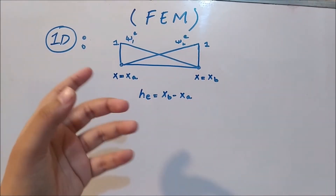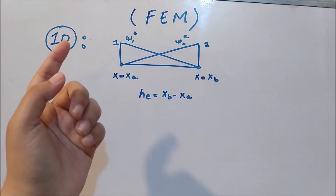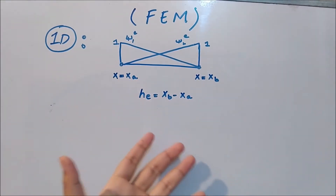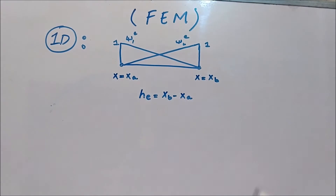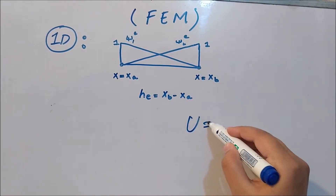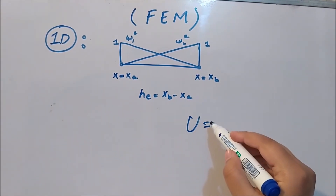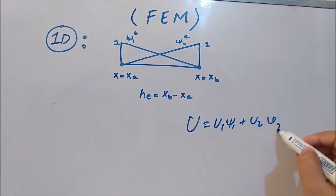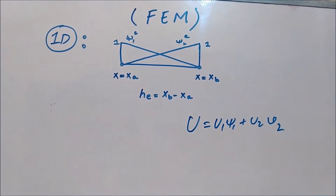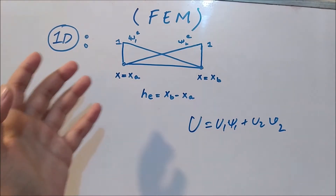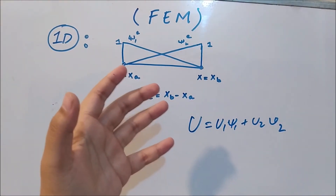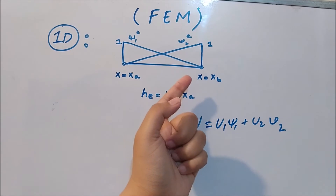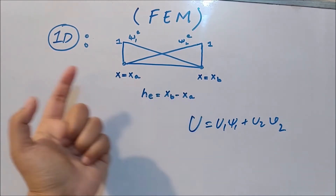The shape function interpolates or changes the values of u by traveling from one end to the other. The general displacement is u = u₁ψ₁ + u₂ψ₂ at the element level, so ψ₁ changes from u₁ to u₂ and vice versa.